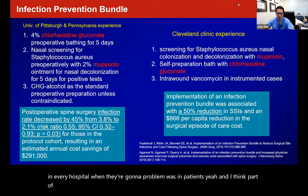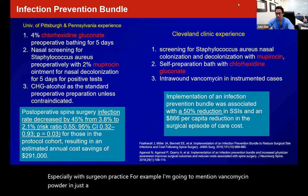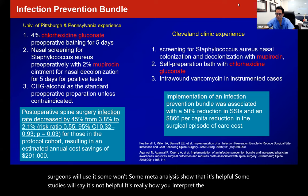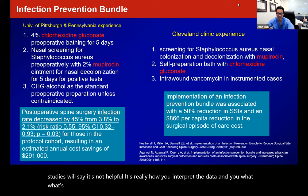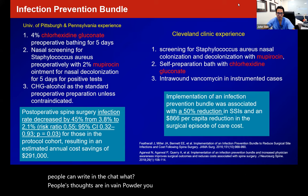Part of the trouble is that even if you follow a protocol, there's still a lot of variation with surgeon practice. For example, vancomycin powder — even its use varies. Some surgeons use it, some won't. Some meta-analyses show it's helpful, some studies say it's not helpful. It really depends on how you interpret the data. Maybe people can write in the chat: yes or no, do you use vancomycin powder?